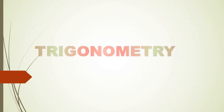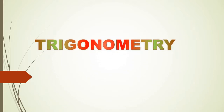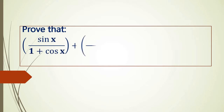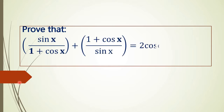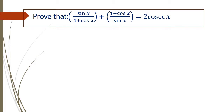Trigonometry. Prove that sin x by 1 plus cos x plus 1 plus cos x by sin x is equal to 2 by cos x.